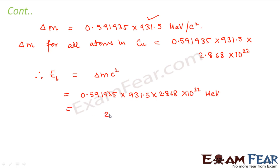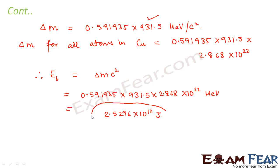On calculation, this comes out to be 2.5296 × 10¹² joules, because we have converted it into joules. We convert from MeV to joules by dividing by 1.6 × 10⁻¹⁹ coulombs. So this is the amount of nuclear energy needed to separate all the neutrons and protons of this copper coin.